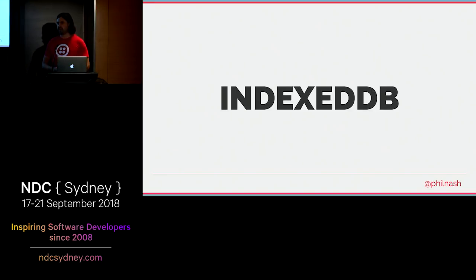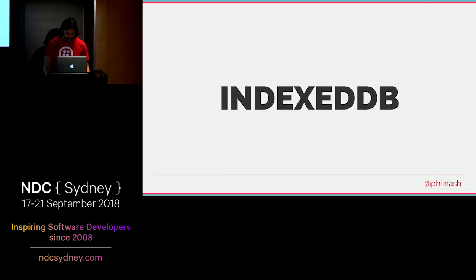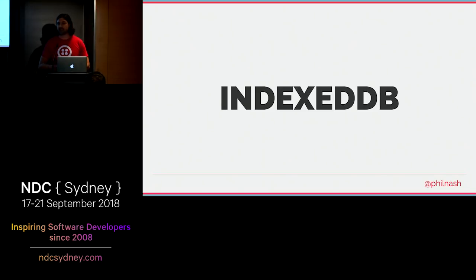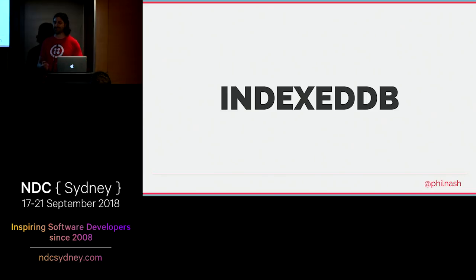Is anybody a fan of IndexedDB on the front end? A lot of people don't like it because it's a horrible API. However, it's the only storage API we can use in the service worker. Service workers do not allow any synchronous APIs at all — you can't look at cookies or local storage. Our only asynchronous storage API is IndexedDB. So if you don't like it and you want to use background sync, you might have to get to like it — or at least use promise-based wrapper libraries.